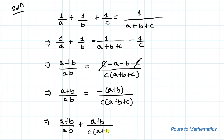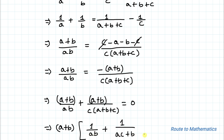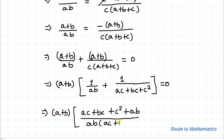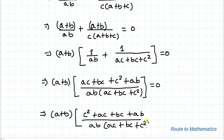Here we can see that both terms have (a+b) as a factor, so we can take (a+b) common. We get (a+b) multiplied by [1/ab + 1/(c(a+b+c))] = 0. Taking LCM inside the bracket gives (a+b) multiplied by (ac + bc + c² + ab) / (ab·c(a+b+c)) = 0.